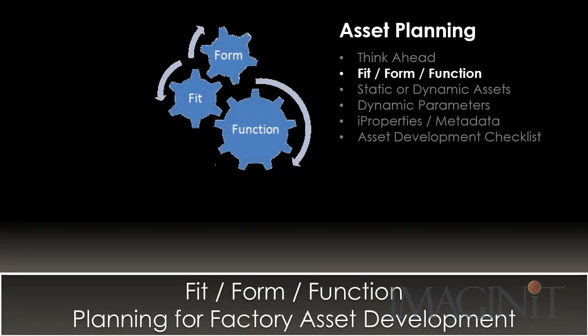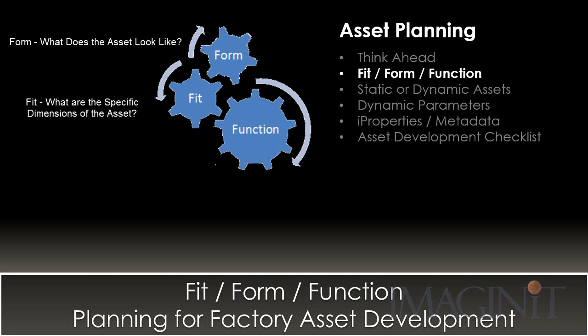One of the first things you want to focus on is the asset's fit, form, and function. When we talk about form, we're really talking about what the asset looks like — what are those defining characteristics that need to be modeled to generate the best representation possible? When it comes to fit, we're talking about the specific dimensions that are absolutely necessary to size the asset correctly. And when we talk about function, we're talking about supporting all of the downstream processes your company might use, including your bill of materials, parts list, and title block, as well as how the asset is going to be used by the user when they drop it into a factory layout.